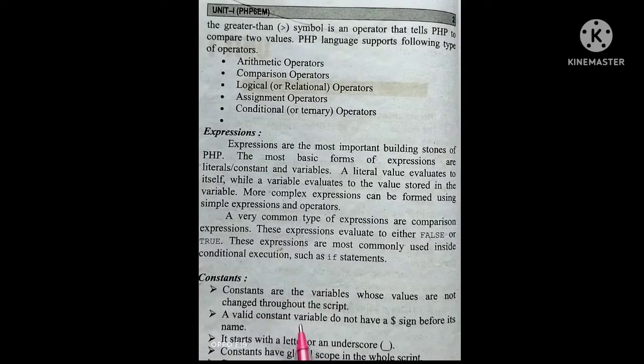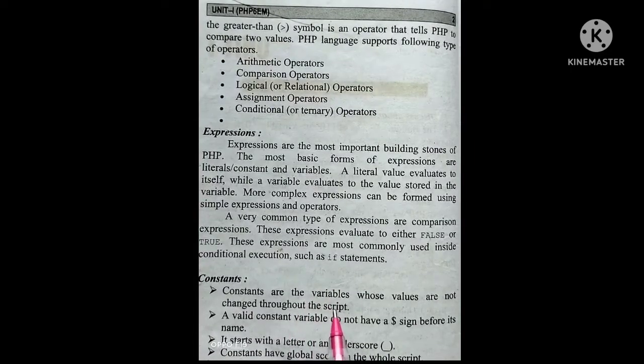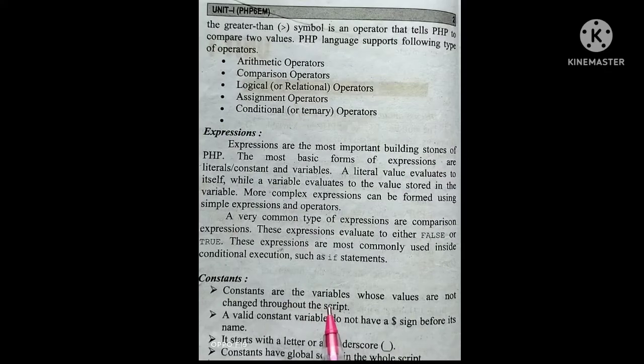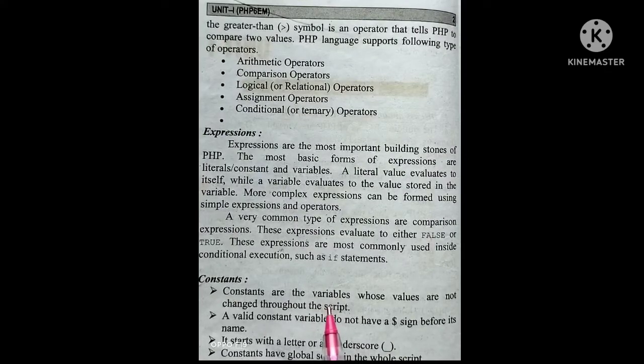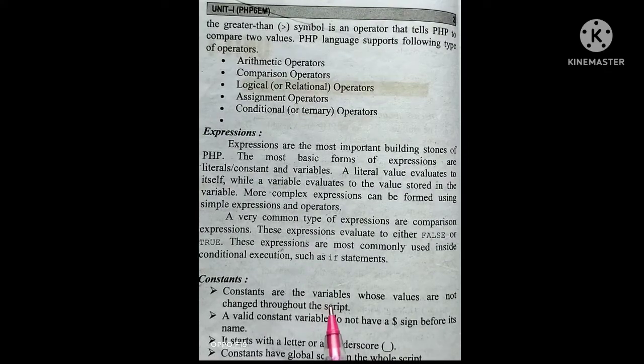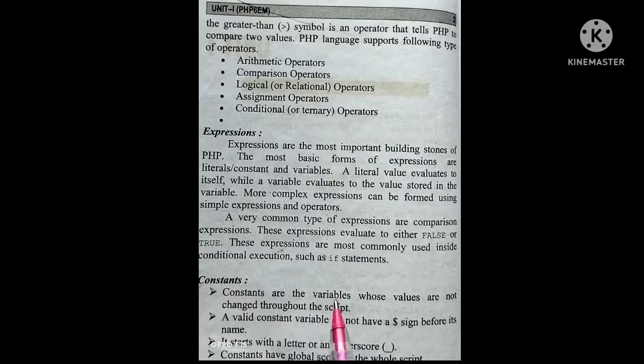A variable whose value can change is called a variable, while one whose value cannot change is called a constant.